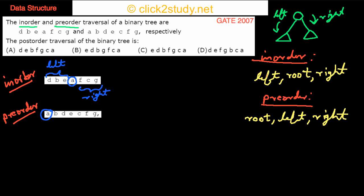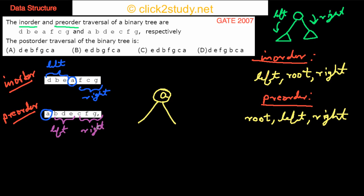So you can write down your root here — this is the root — and you'll have something on the left side and on the right side. On the left you have D, B, E, which you can find in the pre-order after the root — this is your left. On the right you have F, C, G — this is your right. Then you do the same thing recursively for the left and right subtrees.